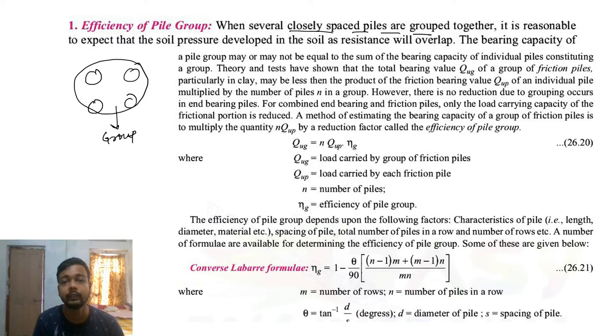It is reasonable to expect that the soil pressure developed in the soil as resistance will overlap. The bearing capacity of a pile group may or may not be equal to the sum of the bearing capacity.